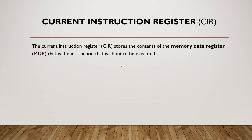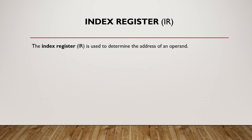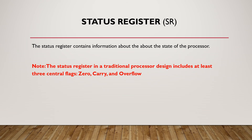The CIR, or Current Instruction Register, stores the contents of the Memory Data Register — that is, the instruction that is about to be executed. The Index Register is used to determine the address of an operand. The Status Register contains information about the state of the processor. It should be noted that the Status Register in traditional processor design includes at least three central flags: zero, carry, and overflow.